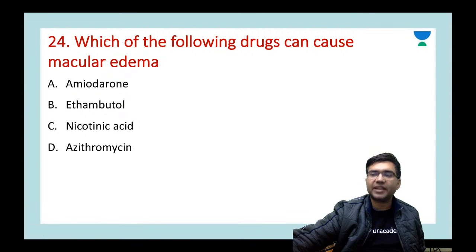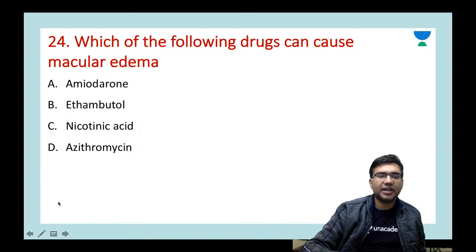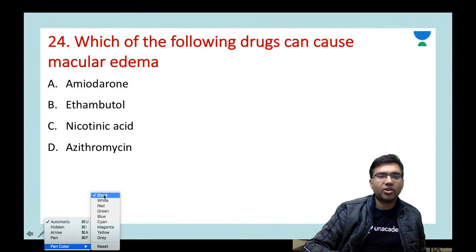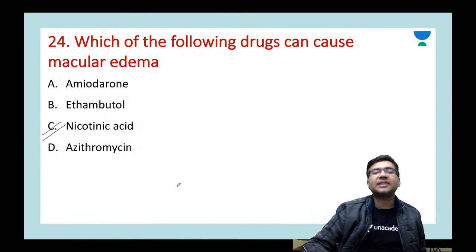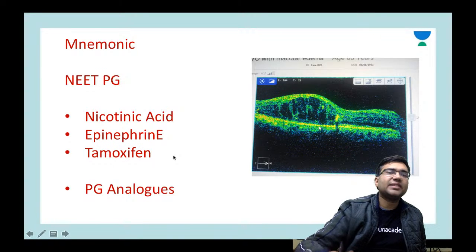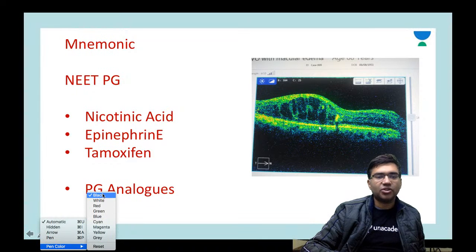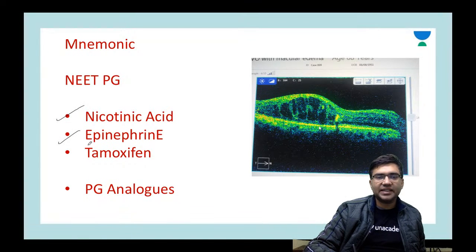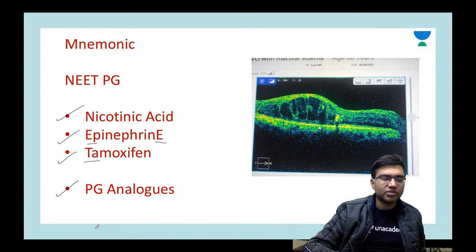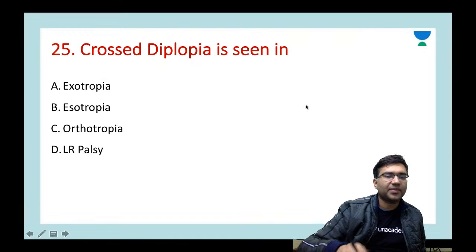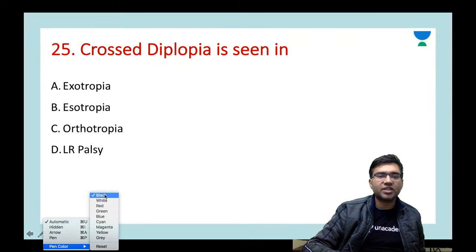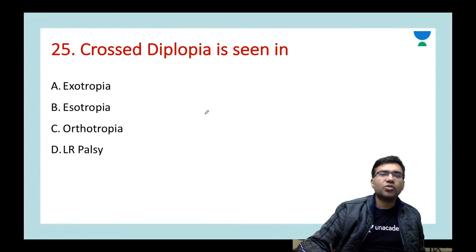Next question: which drug can cause macular edema? Options: amiodarone, ethambutol, nicotinic acid, azithromycin. The answer is C — nicotinic acid. Remember the mnemonic NEAT PG: N = nicotinic acid, E = epinephrine, A/T = tamoxifen, PG = prostaglandin analogs. In the OCT image you can see cystic spaces in the inner layers of the retina — this is macular edema.